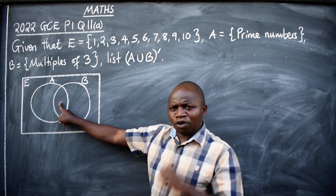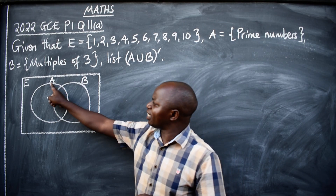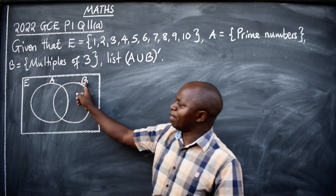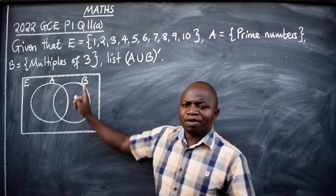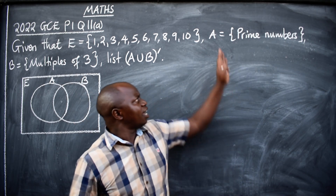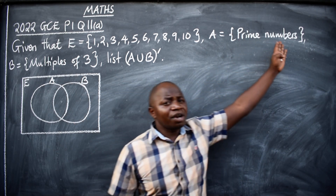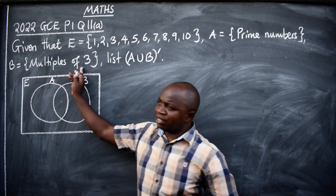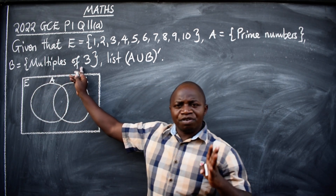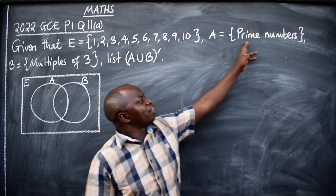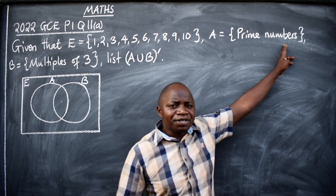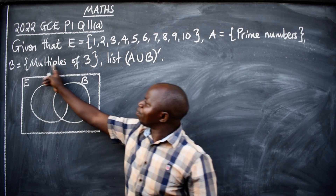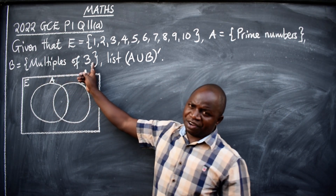Because of that, we don't know the intersection of A and B yet, because A and B are given in words. So the first thing is we need to know the prime numbers, and we also need to know the multiples of three.